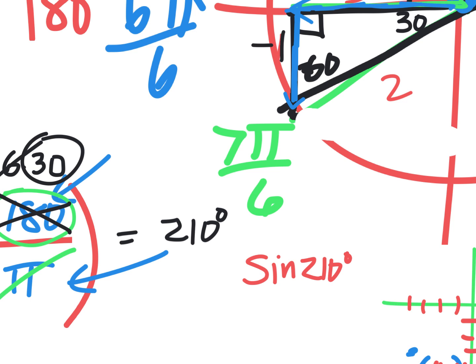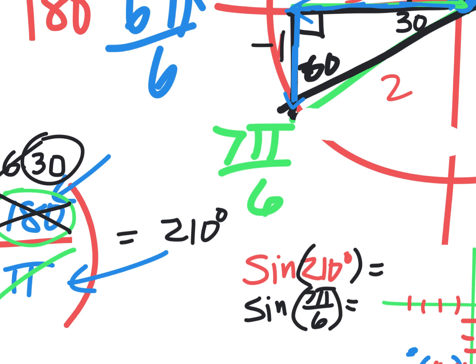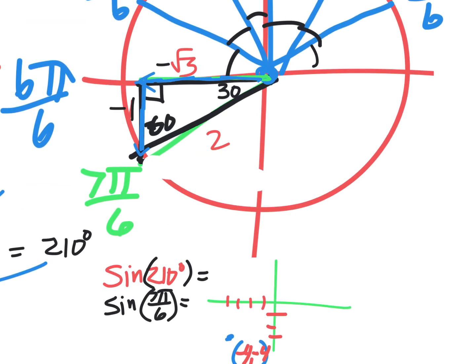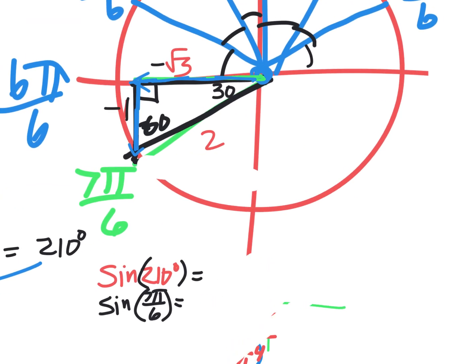So I showed you yesterday that what we really need to get to is: what is sine of 210? Now you've gotten far enough to know that's the same as sine of 7 pi over 6, because those are just two different ways to express that angle. One's in degrees, one's in radians. You remember what sine is — sine includes opposite and hypotenuse. But which angle do you go from? The reference angle. The one by the center is the central angle, and that's the one you always do your trig from.